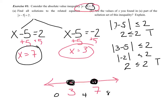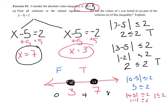Going into the original: plugging in zero, the absolute value of zero minus five is less than or equal to two — that gives five is less than or equal to two, which is false. Plugging in four: the absolute value of four minus five is less than or equal to two — that's the absolute value of negative one, which is positive one, and one is less than or equal to two, so that's true. For eight: eight minus five is three; is three less than or equal to two? False. So I shade in between, where it's true.